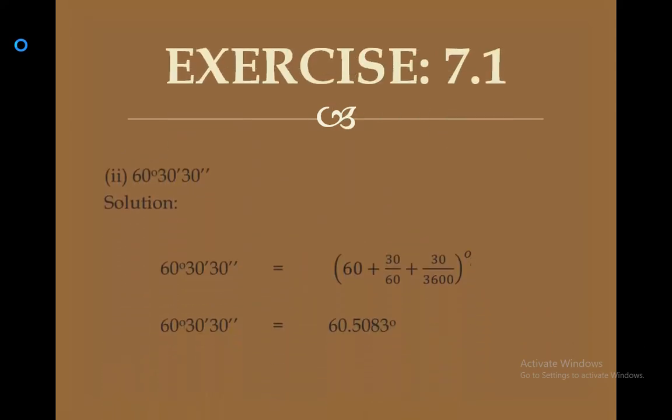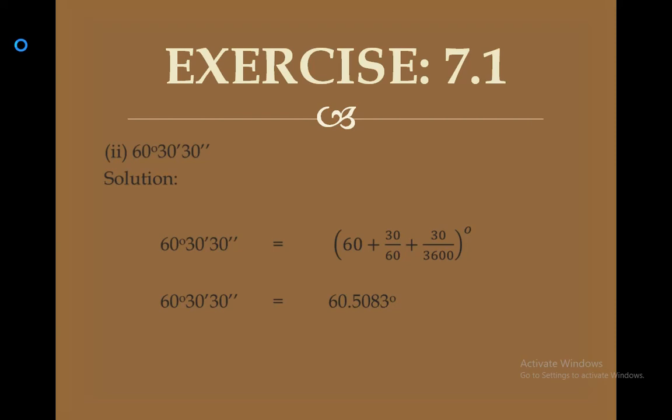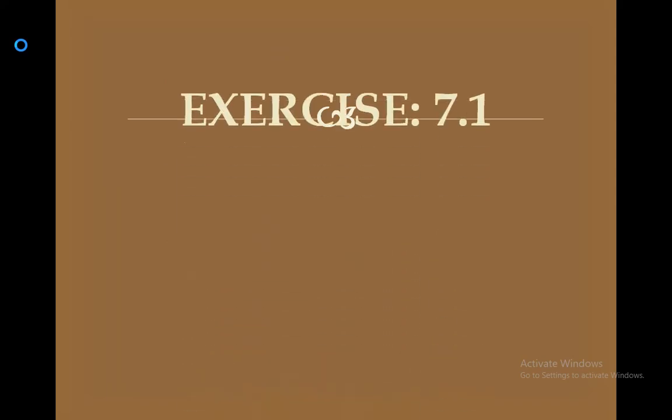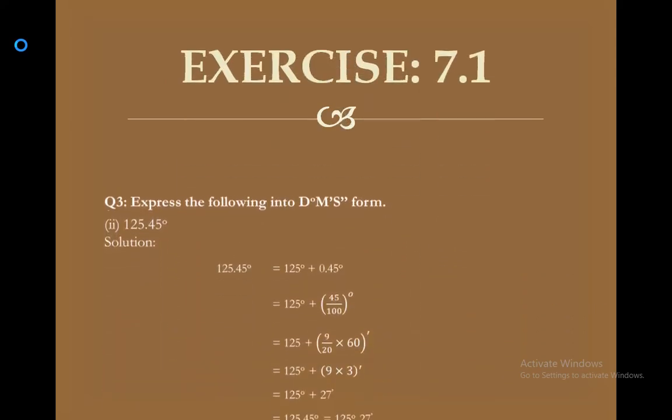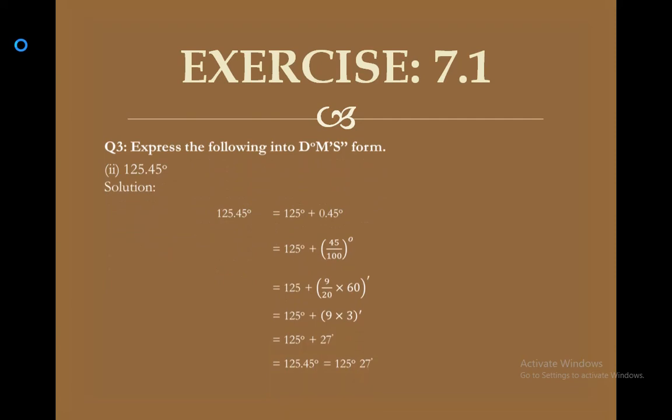The next part is 60 degrees 30 minutes 30 seconds. The 60 degrees remain the same. To convert 30 minutes to degrees, divide by 60 once. To convert 30 seconds to degrees, divide by 3600. Using the calculator, the simplified result becomes 60.5083 degrees.